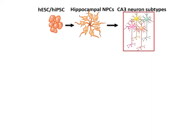Here, we report an efficient differentiation paradigm that generates patterned hippocampal NPCs and gives rise to CA3 pyramidal neurons. This protocol generates multiple CA3 neuronal subtypes, including subtypes that are present in human but not in mouse.